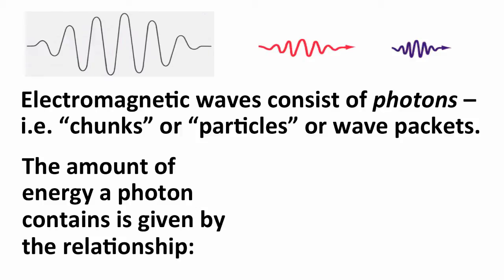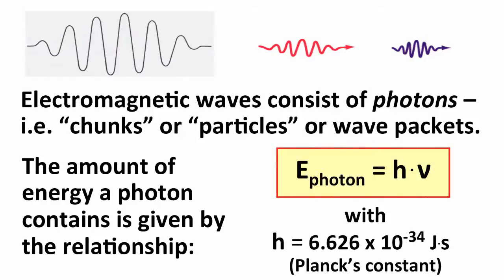Each photon carries some energy. The amount of energy a given photon contains is given by: energy equals H times nu, where H is Planck's constant, which has a value of 6.626 times 10 to the minus 34th joule seconds — joules times seconds, not joules per second — and nu is frequency.